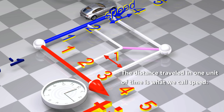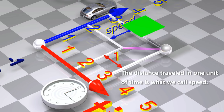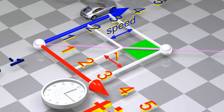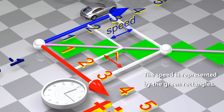The distance traveled in one unit of time is what we call speed. The speed is represented by the green rectangles.